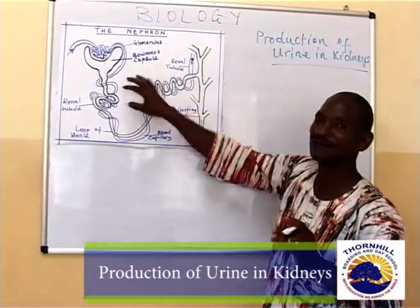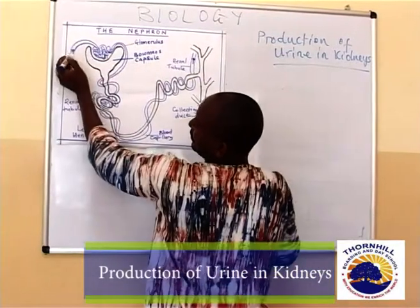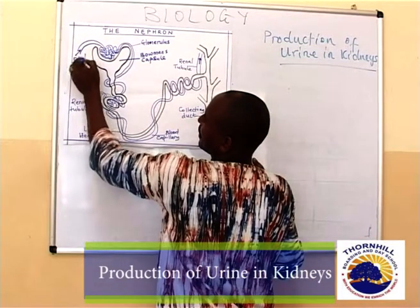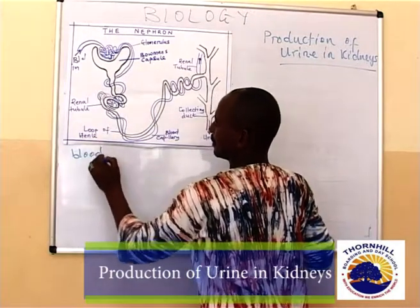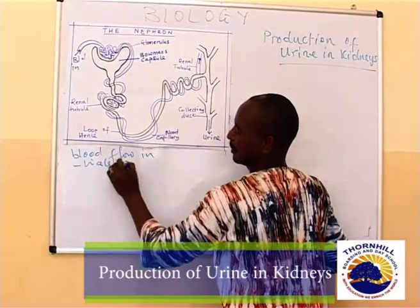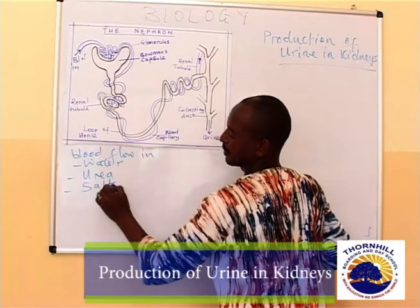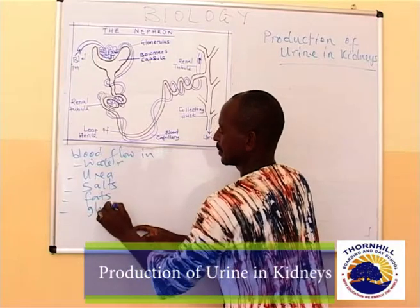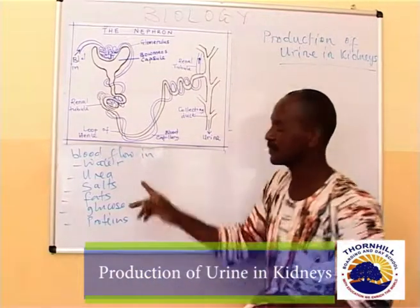This is only the structure of the nephron — one nephron found in the pelvis of the kidney. Remember, this is the blood which is coming from the renal artery, so here we have the blood flowing in. This blood coming in consists of water, urea, mineral salts, fats, glucose, and proteins. All these are found in this blood flowing in.